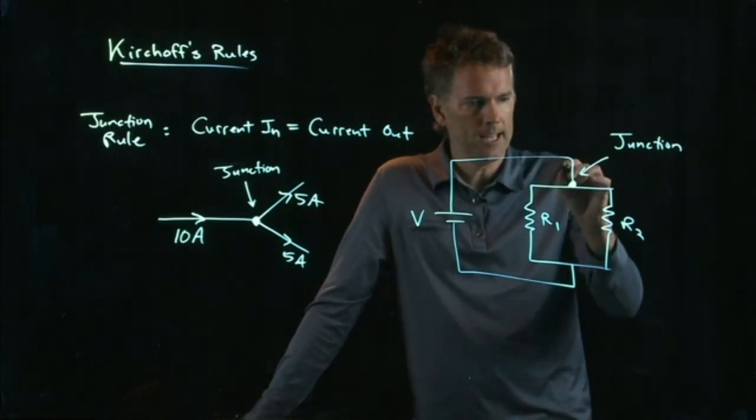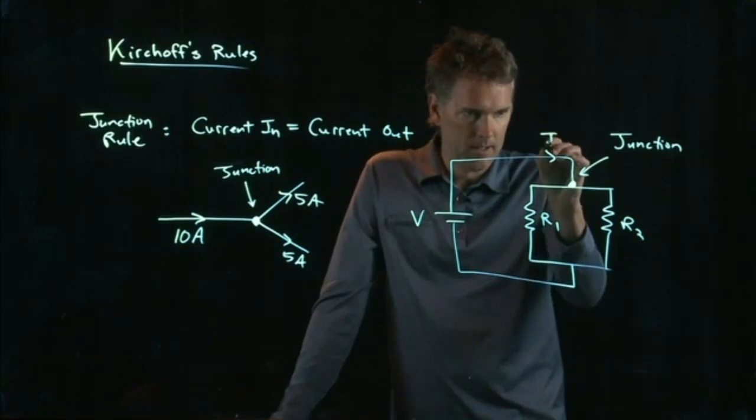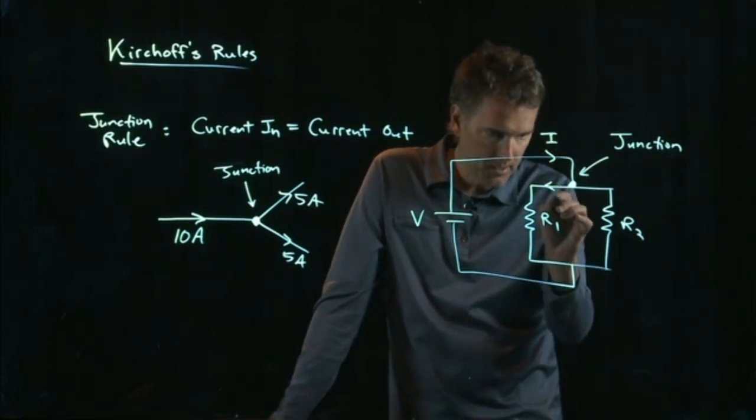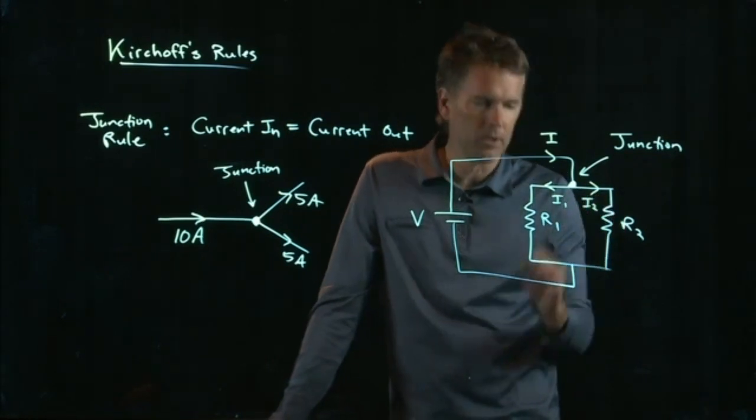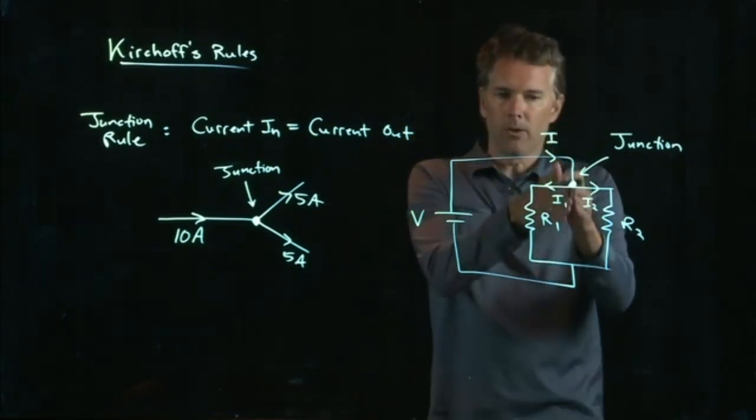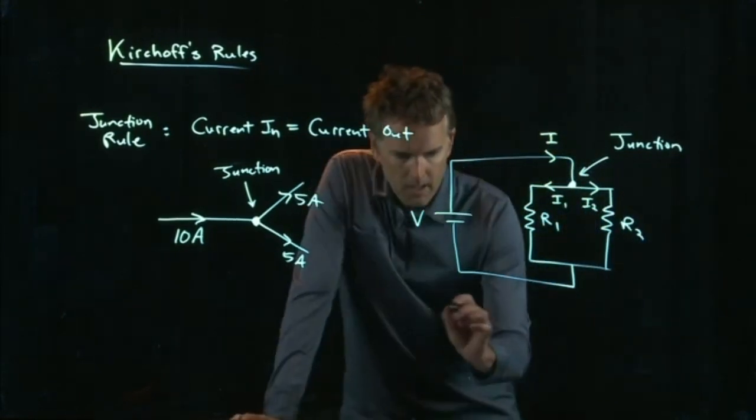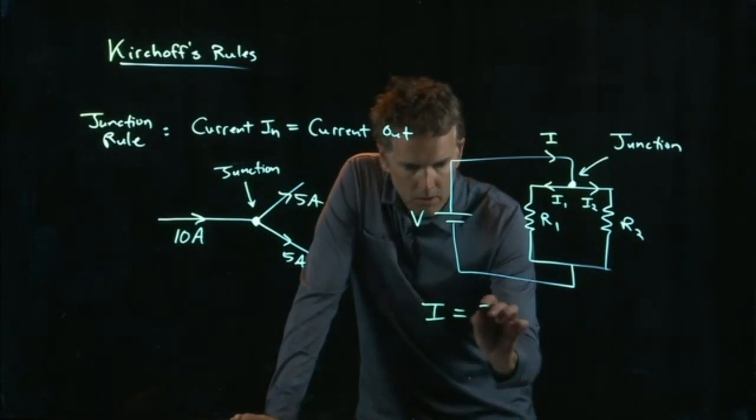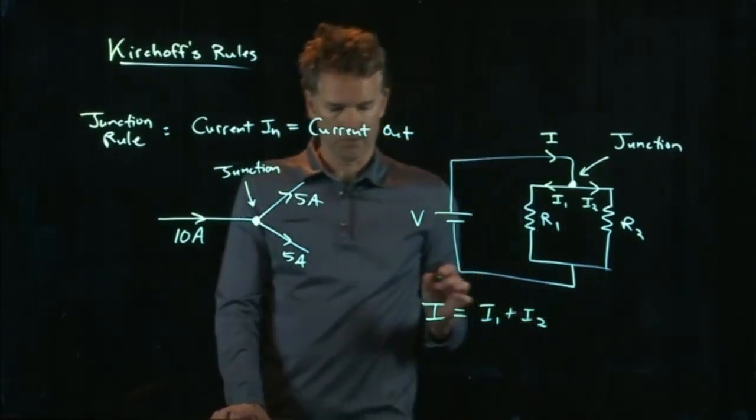Okay? Current in is going to be I. Current out is whatever goes in that one, plus whatever goes in that one. So we'll call it I going in, I1 to the left, I2 to the right. So, I equals I1 plus I2.